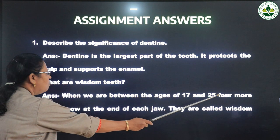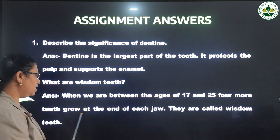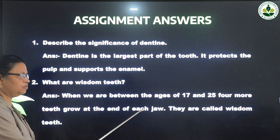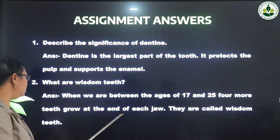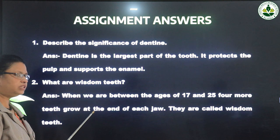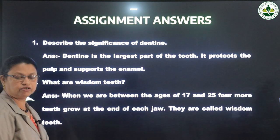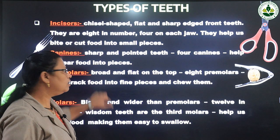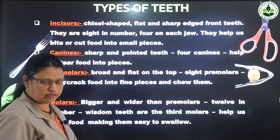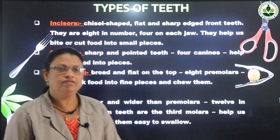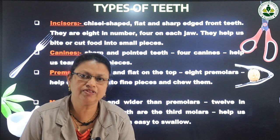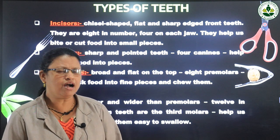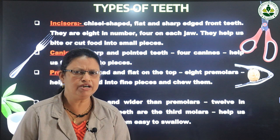The second question: what are wisdom teeth? When we are between the ages of 17 and 25, four more teeth grow at the end of each jaw; they are called wisdom teeth. Please copy the answers in your notebook.